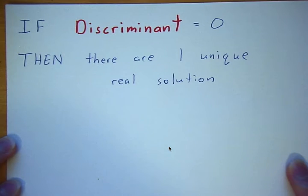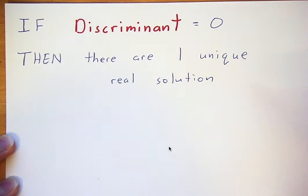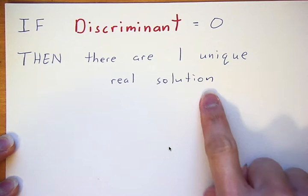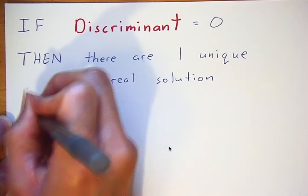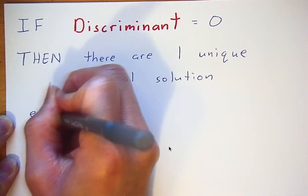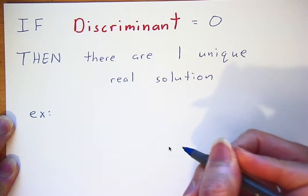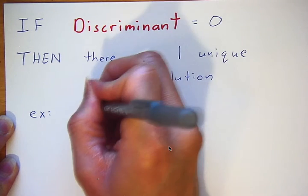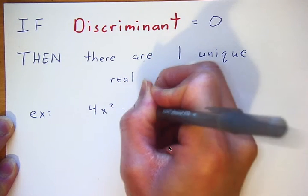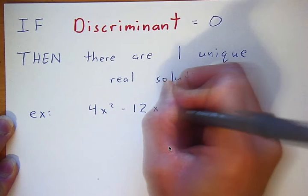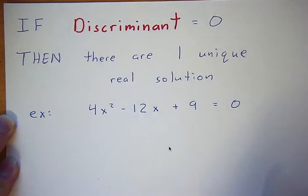Let's look at another case. If our discriminant is equal to zero, then we'll end up having one unique real solution. Let's give an example of that.